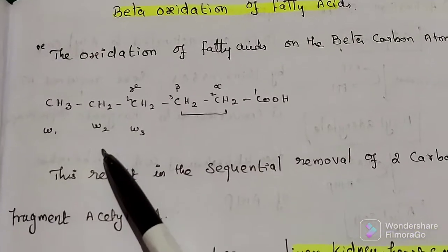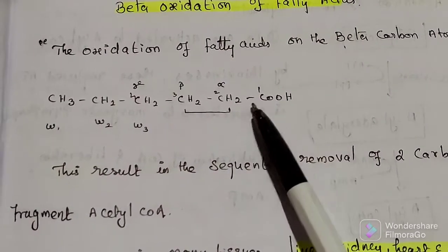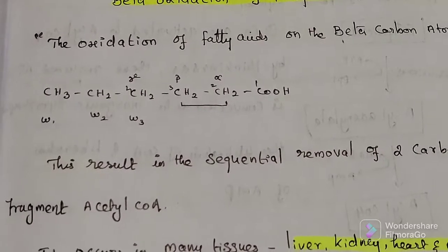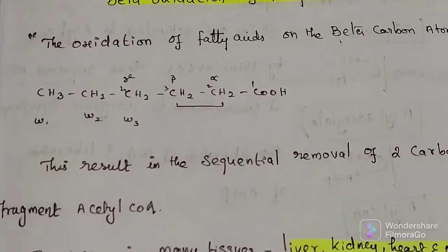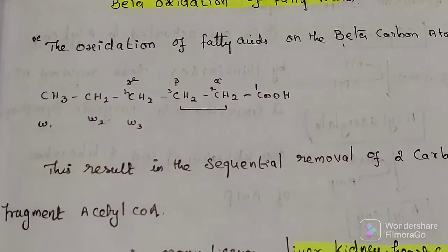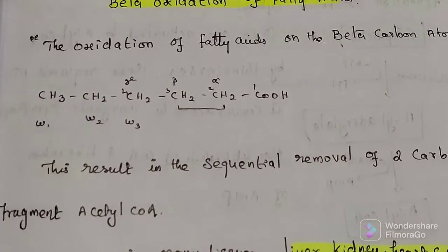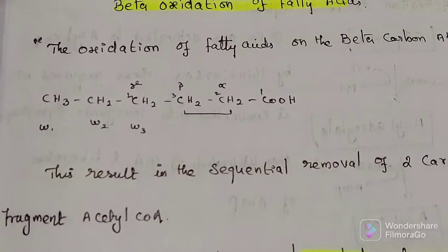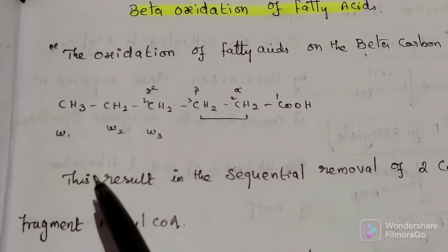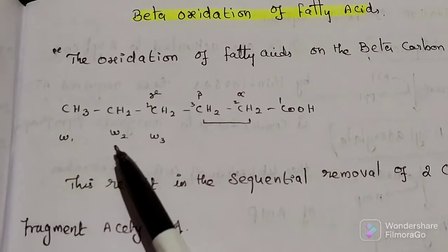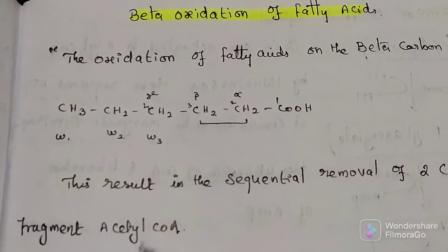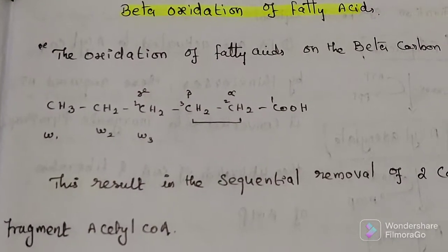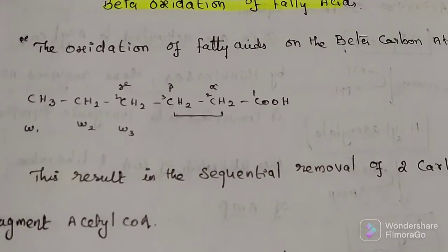In a fatty acid, carbons are numbered from the carboxyl end. The carbon atom adjacent to the carboxyl group is alpha, the next is beta, and so on. From the methyl end, they are numbered omega-1, omega-2, omega-3, and so on. The most common fatty acid oxidation is beta oxidation.